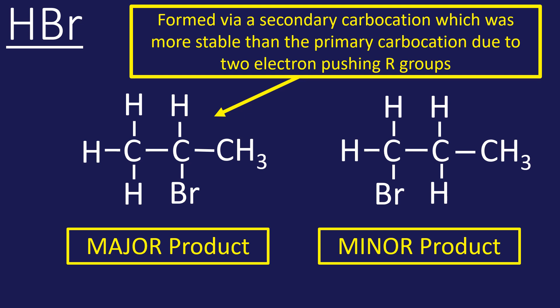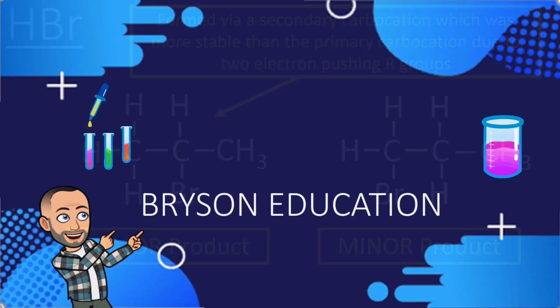The one on the right is our minor product. Let's name them: the one on the left is 2-bromopropane, the one on the right is 1-bromopropane.